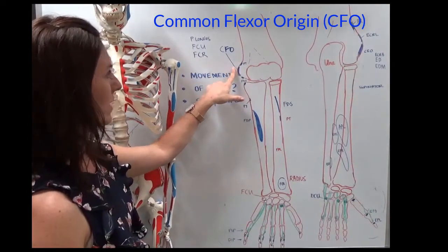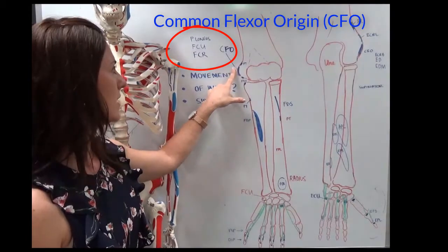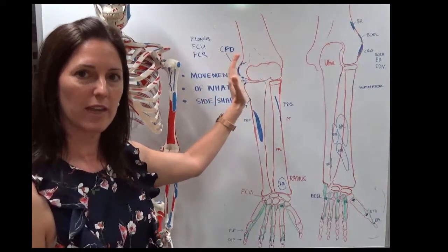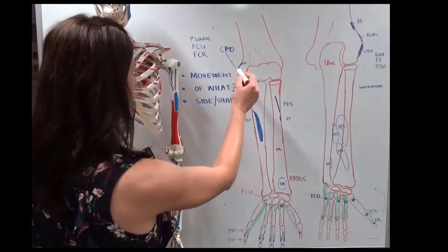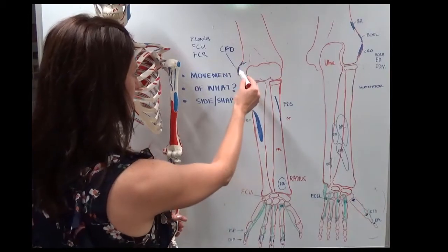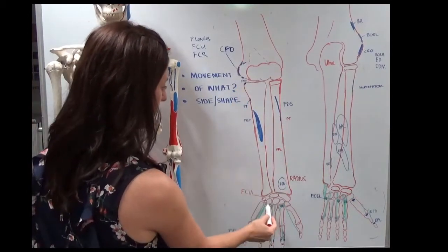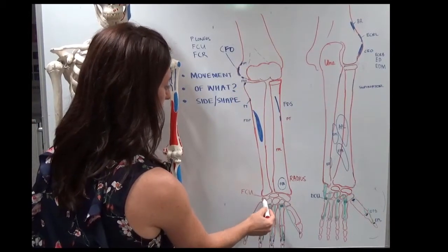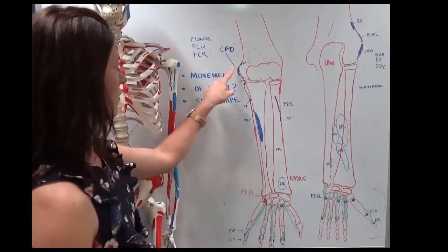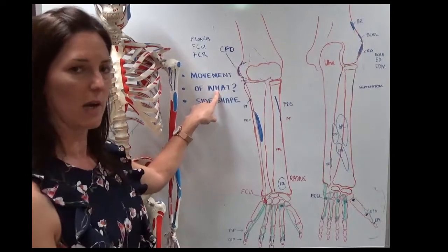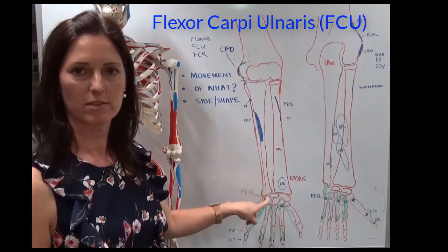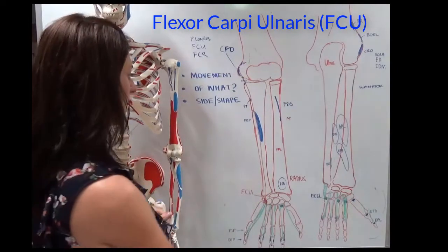The common flexor origin, as it's known, is the medial epicondyle of the humerus. And a lot of things hang off there. And if you are going to move the wrist, you're going to need something to hang off there and finish at the level of the carpal bones. So this one here, on the outside of the wrist, is your flexor of what? Carpi. And we're going to name it after the side it's on. It's near the ulna. So flexor carpi ulnaris, that's your first one.